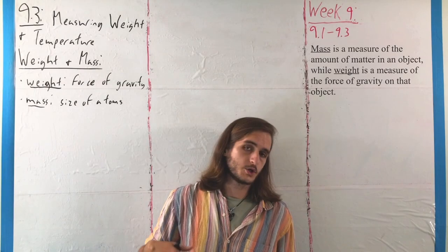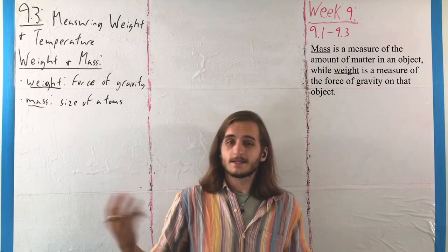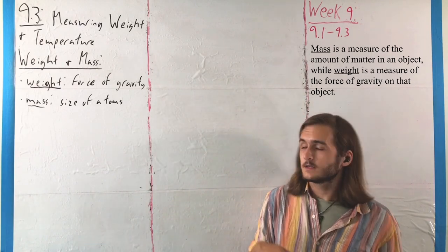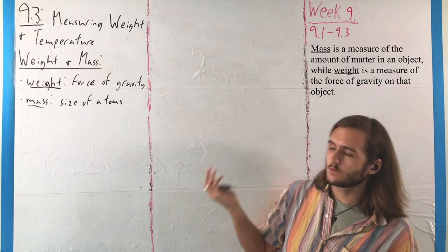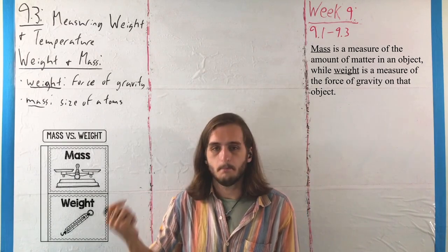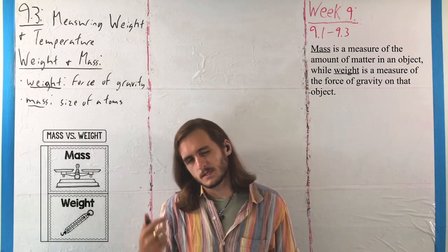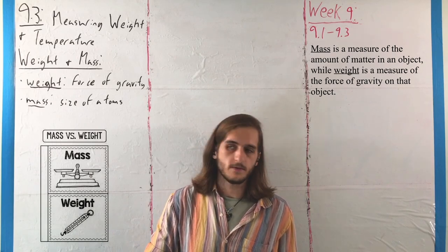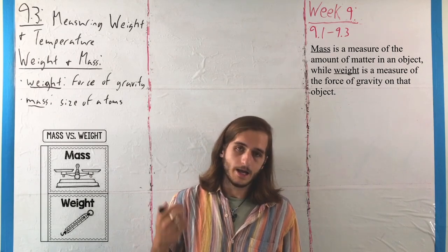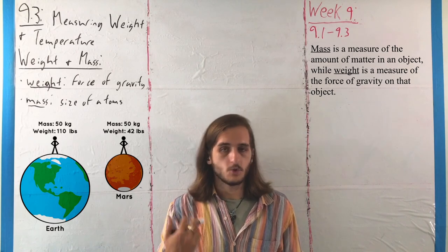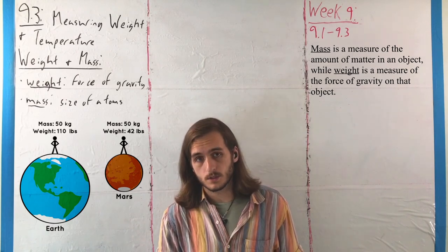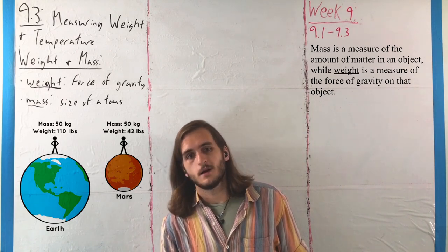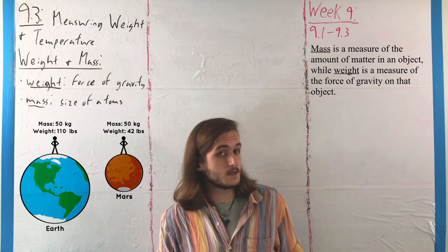Our last ideas here are in terms of being able to describe the size of an object, where we do that generally in terms of what are called weight and mass. Weight, specifically at least in the physics context, refers to the force of gravity on an object. So the fact that you weigh some number of pounds varies depending on the celestial body that you happen to be nearest to.